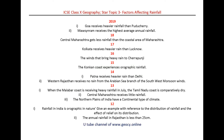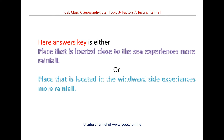Let us go through the question paper once again. All these questions are about factor three — that means questions about orographic rainfall and the influence of proximity to the sea on rainfall. The answer key is either: a place located close to the sea experiences more rainfall, or a place located on the windward side experiences more rainfall.